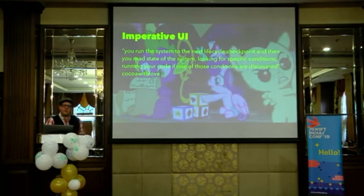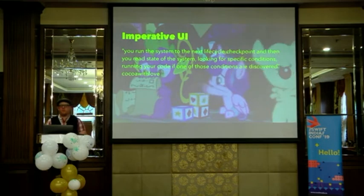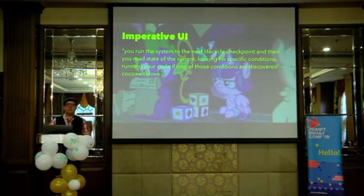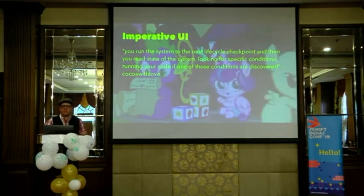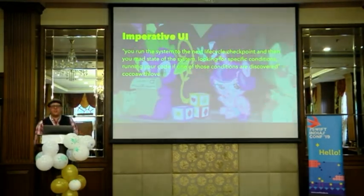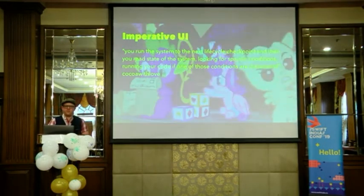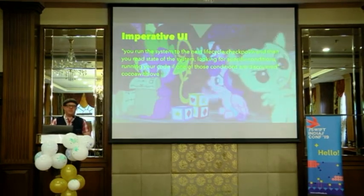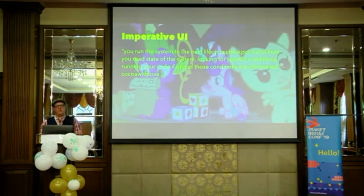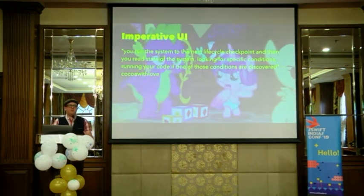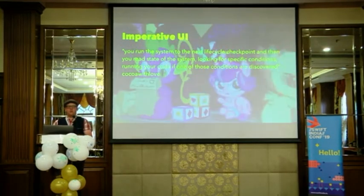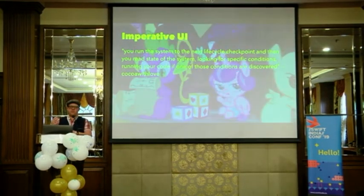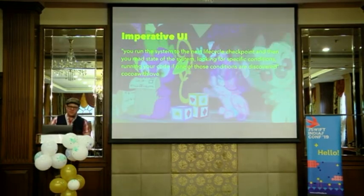The more common version of writing UI that we're probably all familiar with is imperative — this is what AppKit and UIKit are at the moment. Matt Gallagher describes imperative UI as: you run the system to the next lifecycle checkpoint and then you read the state of the system, looking for specific conditions, running your code if one of these conditions are discovered. Declarative UI is very much just describing the UI to you all, whereas imperative UI is more of the form of telling you how to construct something.